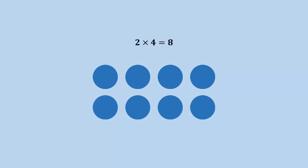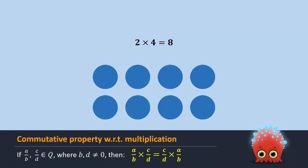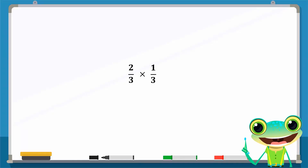Consider these four rows of balls. If we change the way these balls are arranged, we will have eight balls. In other words, the order in which these numbers are multiplied does not matter. Similarly, the order of two rational numbers undergoing multiplication does not matter. If a over b and c over d are any two rational numbers such that b and d are not equal to zero, then a over b times c over d equals c over d times a over b. This is called the commutative property of rational numbers with respect to multiplication.